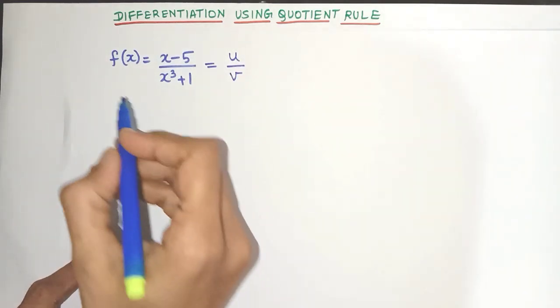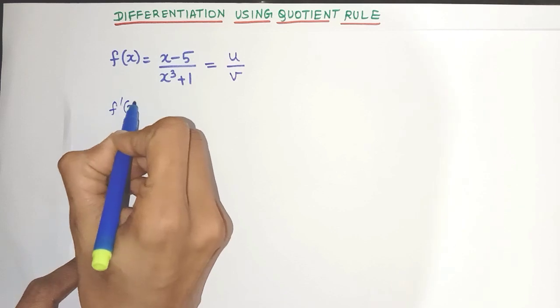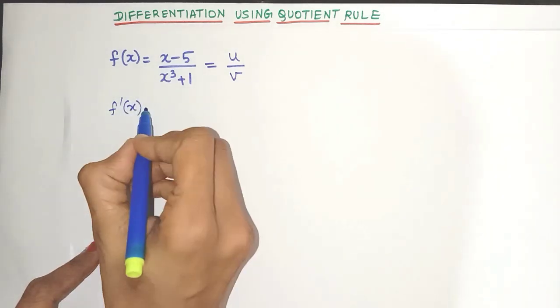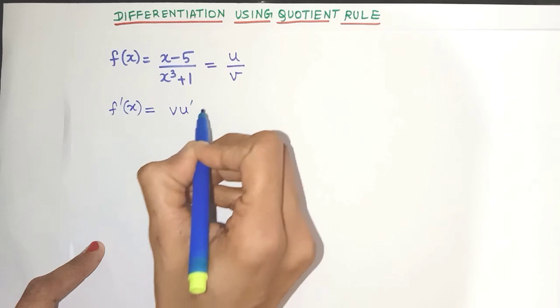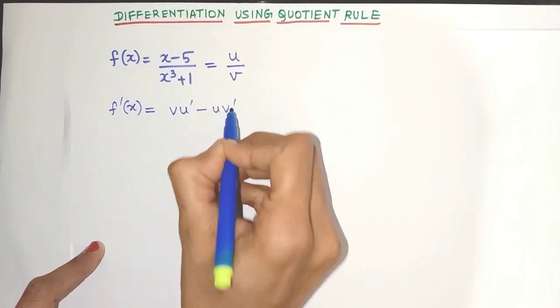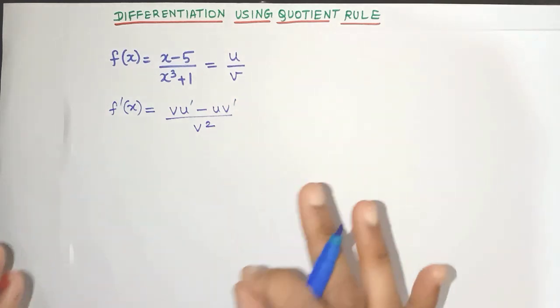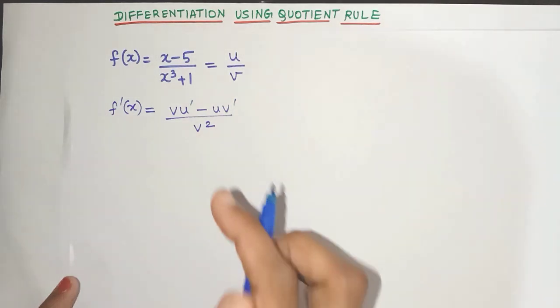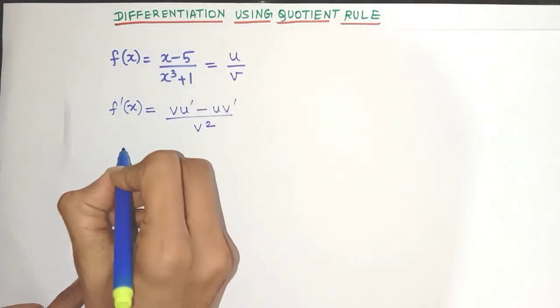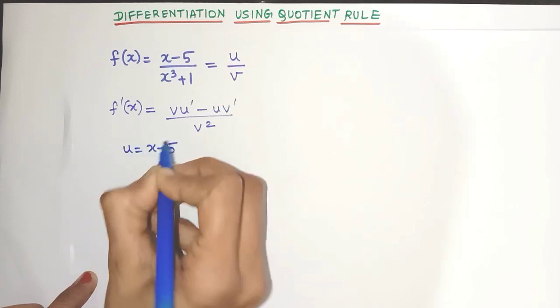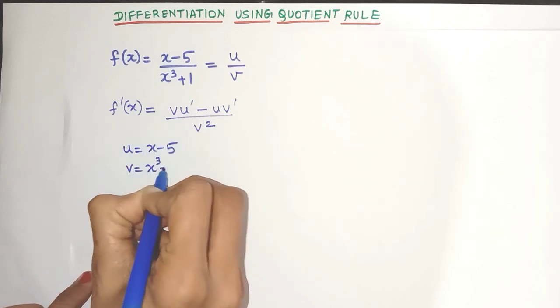So the quotient rule states that the derivative, that is f prime or f dash of x, is nothing but v multiplied by the derivative of u minus u multiplied by the derivative of v divided by v square. That's it. It's very easy friends. Now we already know what are the u and v values right? u we took it as x minus 5, v as x cube plus 1.